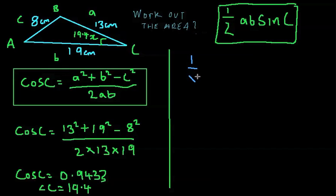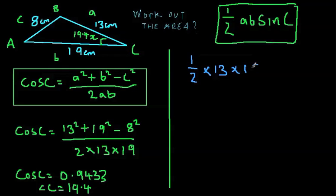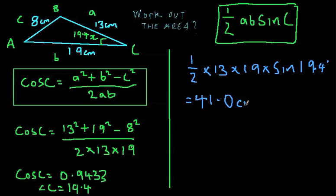Half times by A, which is 13, times by B, which is 19, times by sine of C, which we know is 19.4 degrees. Now if we put this into our calculator, we should get 41.0 centimeters squared to three significant figures.